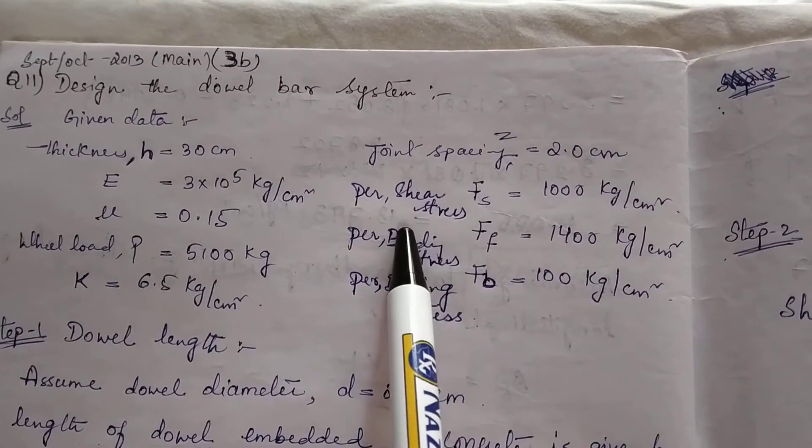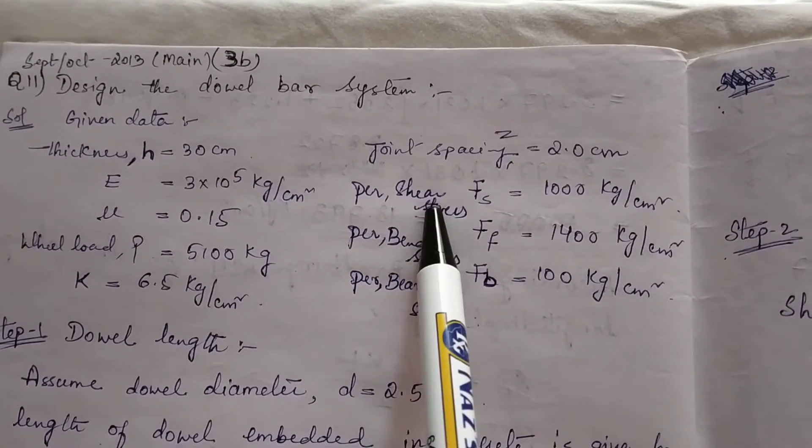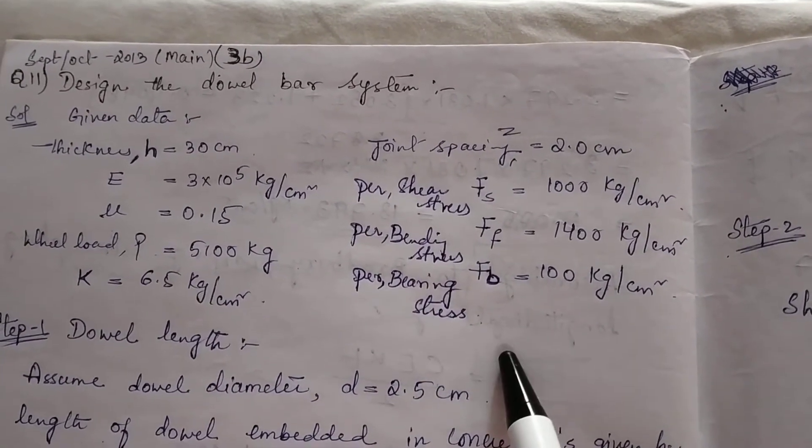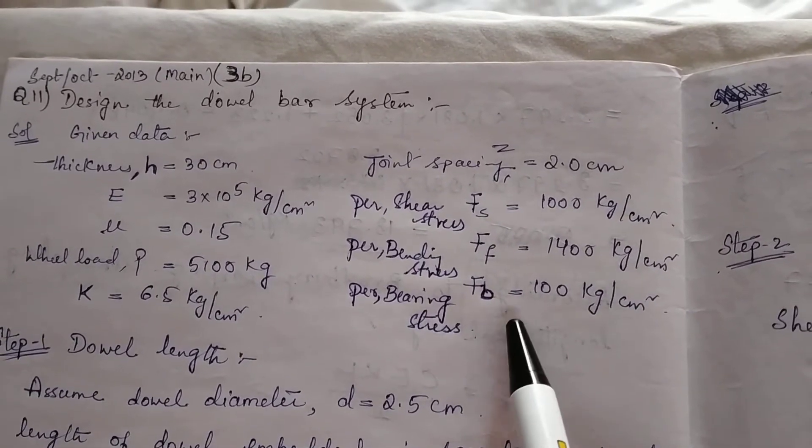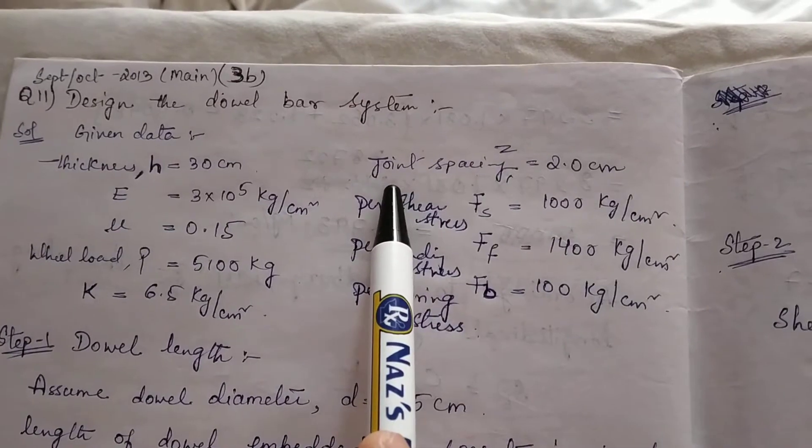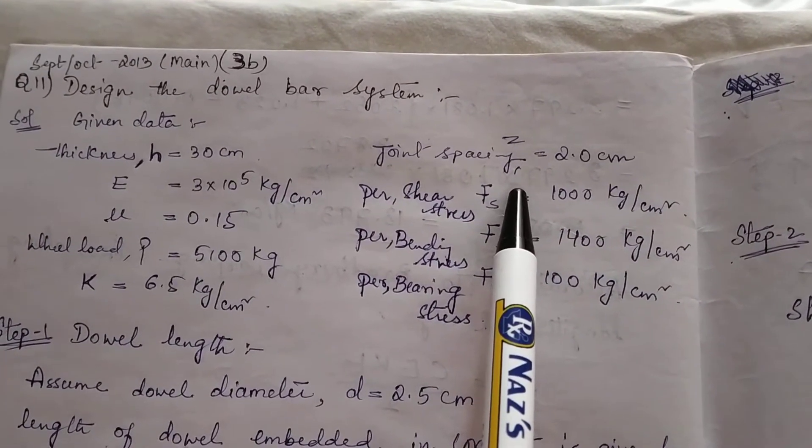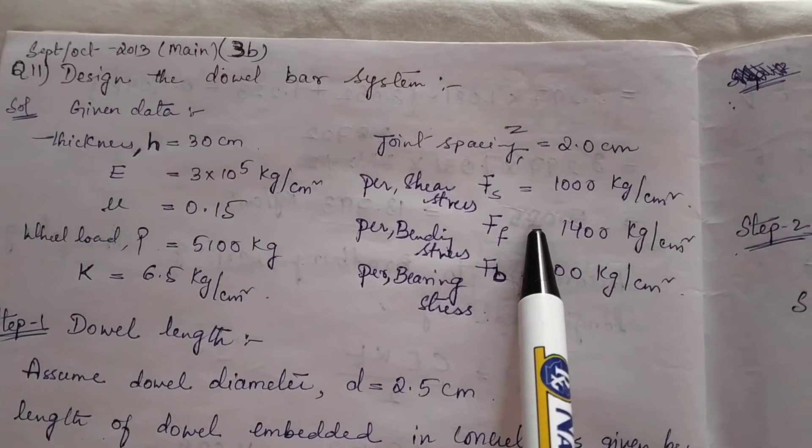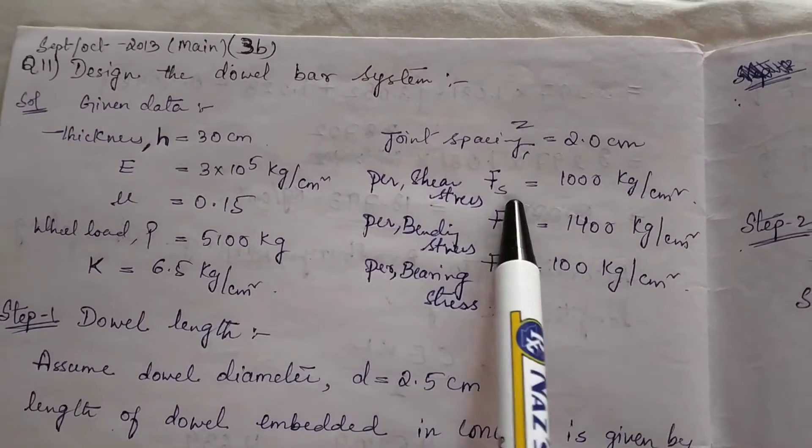For joining this 12 meters and 3 meters length of bars, we need spacing. That spacing is considered as the joint spacing to take the load and transfer it to the base.